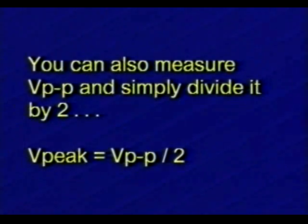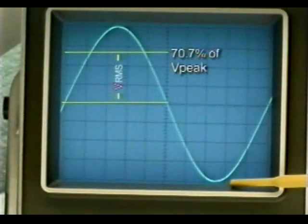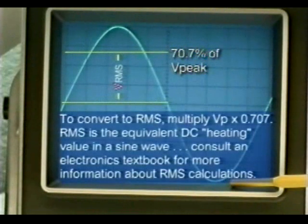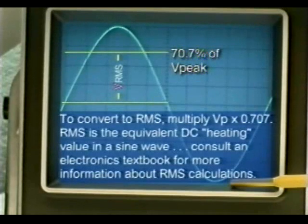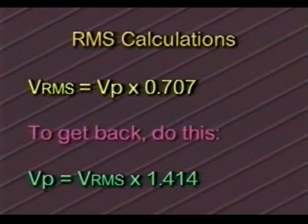You can also measure the peak-to-peak voltage and divide it by two to get the peak value. The root mean square (RMS) voltage of a sine wave is 70.7% of the peak voltage. To get the RMS value, multiply the peak voltage by 0.707. RMS is the equivalent DC heating value of a sine wave. To summarize: multiply peak voltage by 0.707 to get RMS; multiply RMS by 1.414 (the square root of 2) to get back to peak voltage.